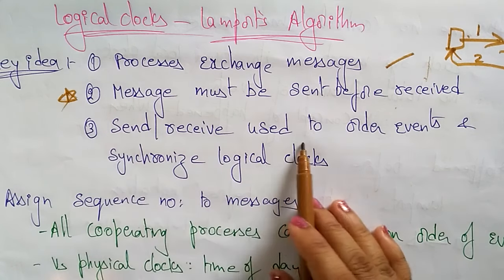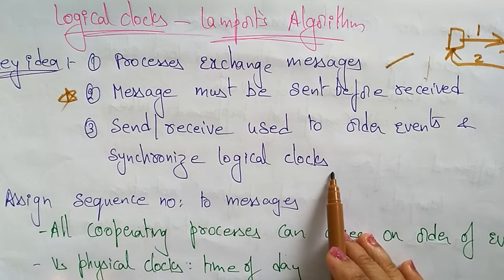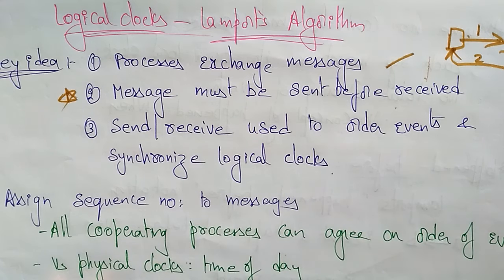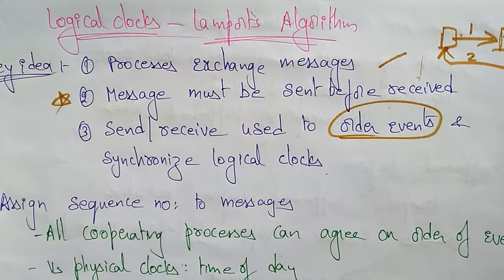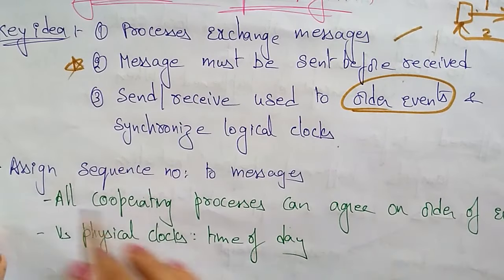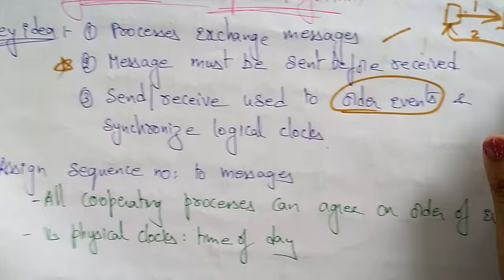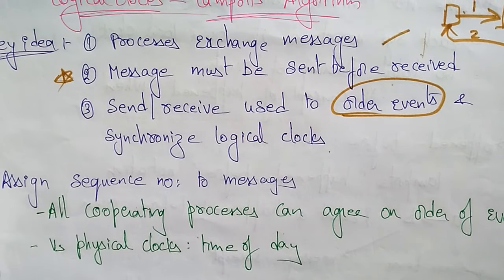Send and receive events are used to order events and synchronize the logical clocks. The logical clocks mainly concentrate on the ordering of events rather than synchronizing the clocks. Whereas in physical clocks the first thing is we need to synchronize the clocks, in logical clocks we concentrate on ordering events. So first we have to assign sequence numbers to messages because we are concentrating on event order.